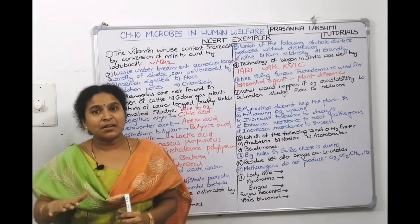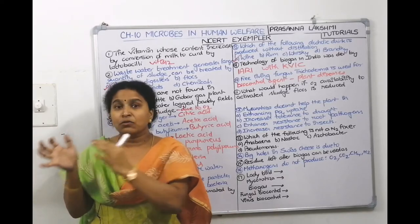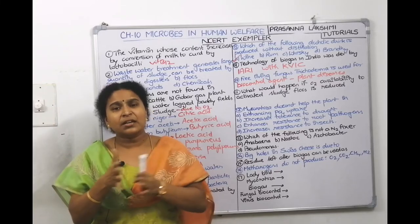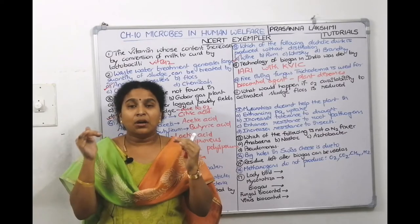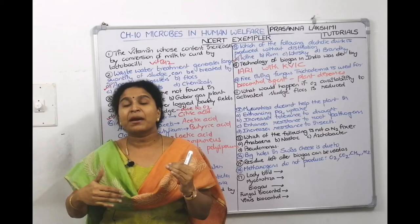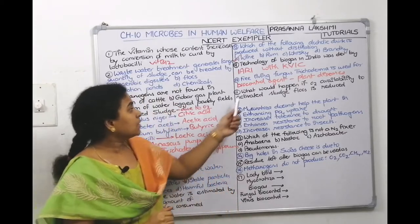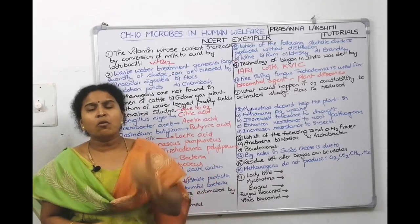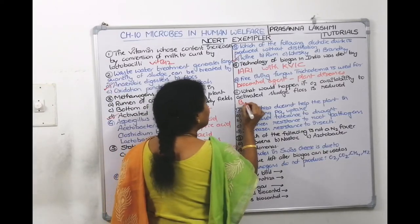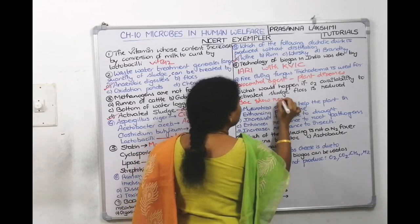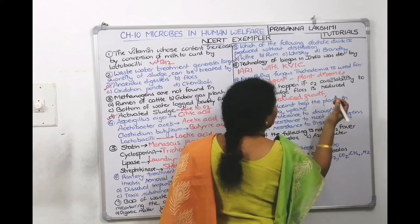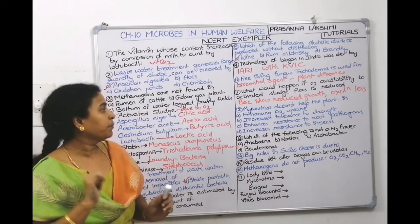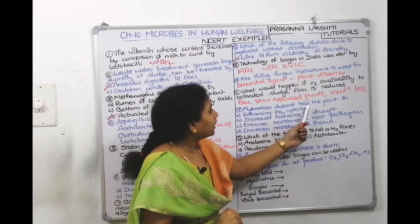Eleventh question: what would happen if oxygen availability in the activated sludge is reduced? In secondary treatment, the aeration tank constantly supplies oxygen so aerobic bacteria can oxidize organic matter. If oxygen availability is reduced, bacteria show reduced growth and oxidation of organic matter becomes less efficient — meaning sewage decomposition slows down.